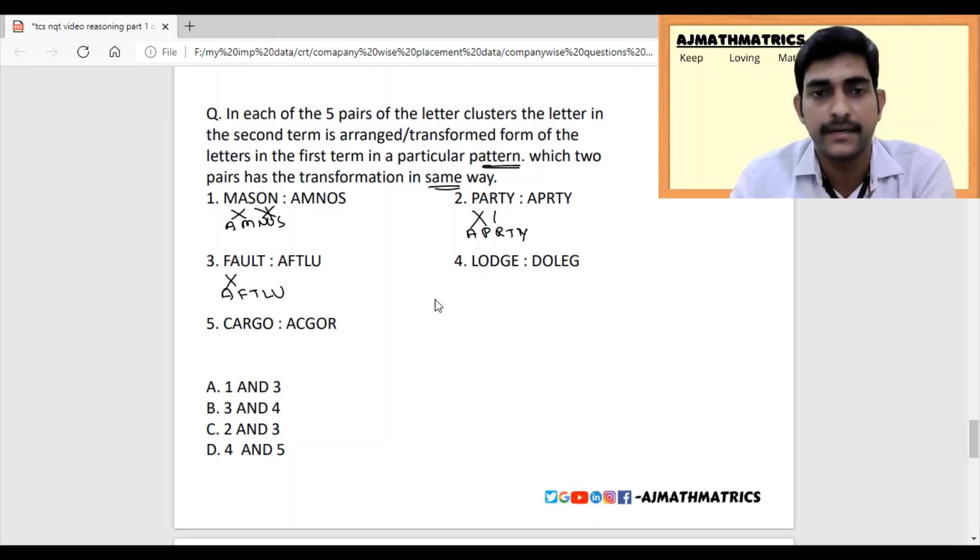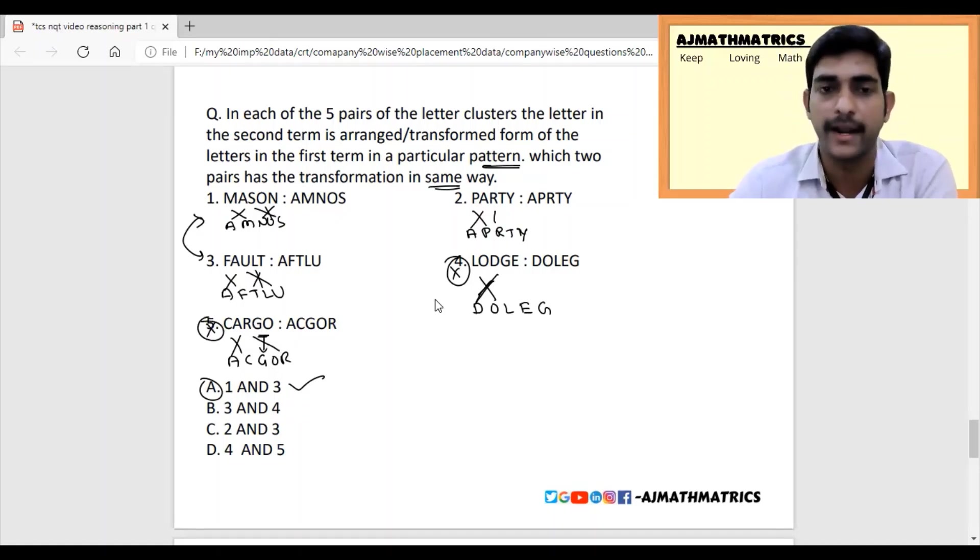FAFTLU: F comes here, A comes here, U goes there, T comes here, and L - so one and three follow the same pattern. Let's check DOLEG as well. D is in third place, so this cannot be the answer. CARGO becomes ACGOR - A comes to first place, C comes to second place, but GO is as it is. None of the two pairs have the same pattern except one and three. So the answer is pairs 1 and 3.